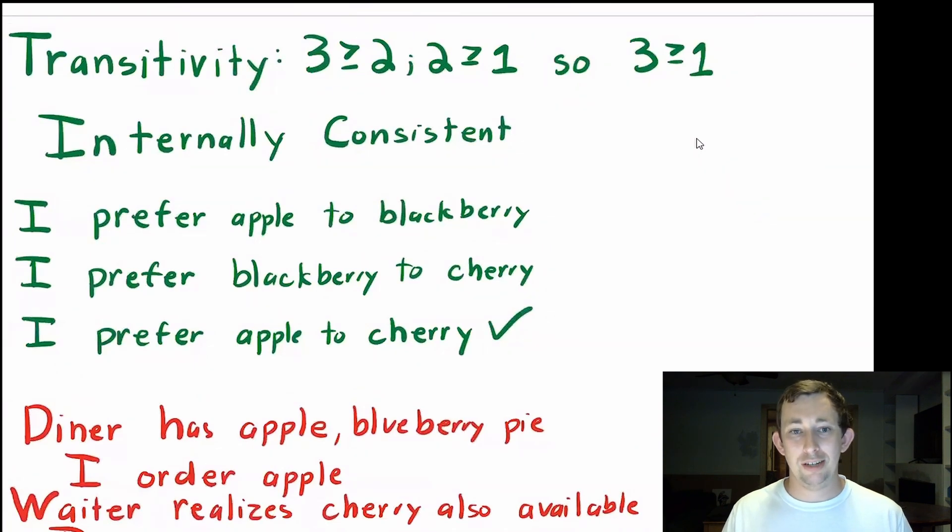Transitivity is the one that we tend to focus on the most. Now transitivity, the equivalent in math is to say, if three is greater than or equal to two, and two is greater than or equal to one, then three is greater than or equal to one. So the way I like to think about this is to be transitive means you're internally consistent.